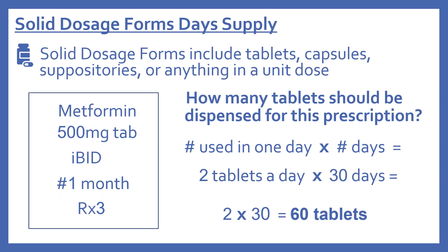Let's look more closely at the different types of prescriptions for the day supply, starting with solid dosage forms. This includes tablets, capsules, suppositories, or anything in a unit dose. Our first example is metformin 500 milligram tablets, 1 BID — that's one twice a day — dispense a one month supply, refill times three. So how many tablets should be dispensed for this prescription?